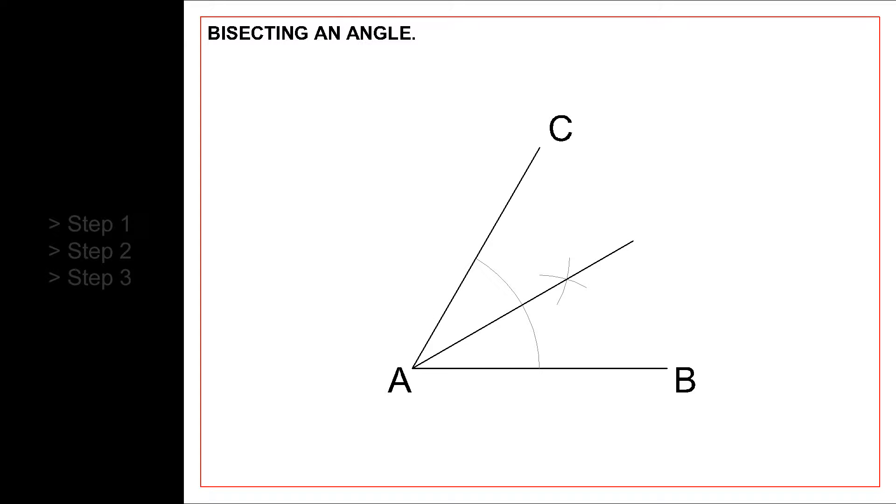Hello everyone, in this video we will learn how to bisect an angle into two equal parts by using ruler and compass only. To illustrate this method, we will bisect a given angle CAB. Let's start.